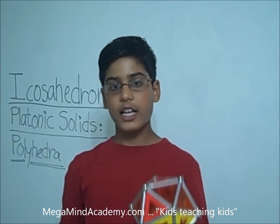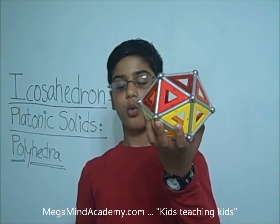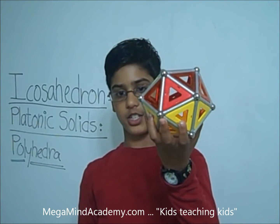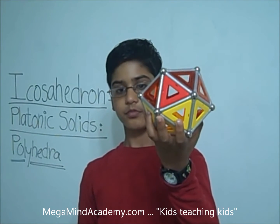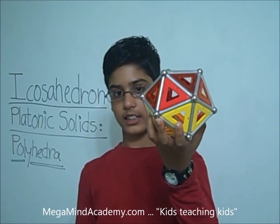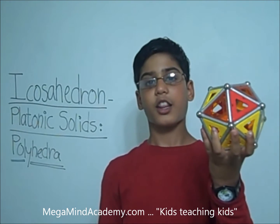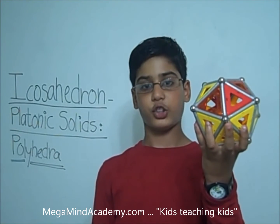On an icosahedron, there are twelve vertices, twenty faces, and thirty edges.